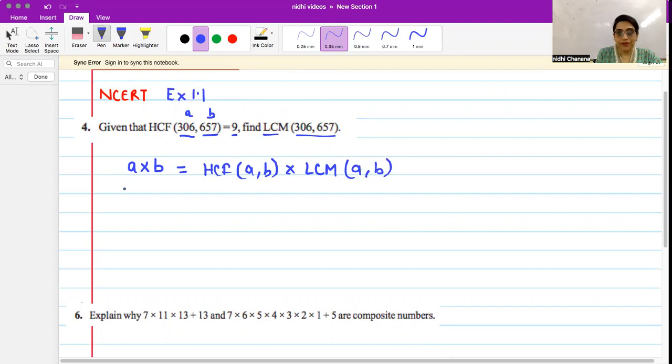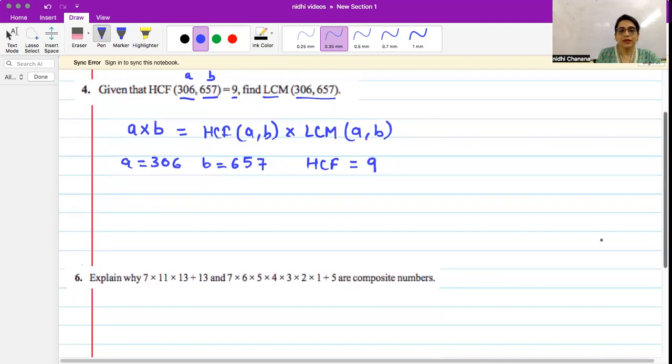So in this case, let's say we have a = 306 and b = 657. These are the two numbers, and the HCF of these two numbers is given as 9. Now we substitute this into the formula: 306 × 657 = HCF × LCM, which gives us 306 × 657 = 9 × LCM.